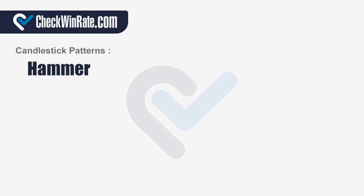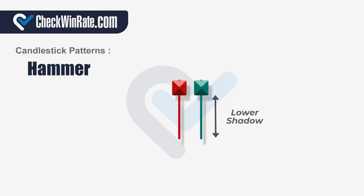What is a hammer candlestick pattern? The hammer pattern is a single candlestick pattern that consists of a long lower shadow and a small real body located at the top of the candlestick. The candlestick resembles a hammer, hence the name.